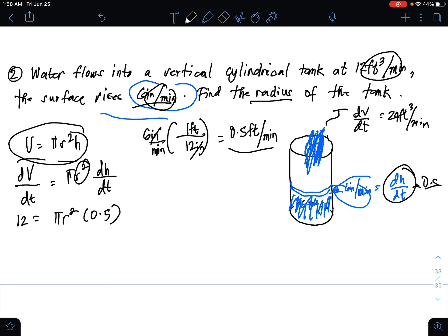Divide both sides by 0.5 pi. R squared equals 12 over 0.5 pi, square root. Your r equals 2.76 feet. That is your final answer.